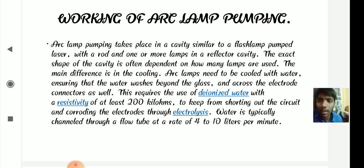This requires the use of deionized water with a resistivity of at least 200 kilohms to keep from shorting out the circuit and corroding the electrodes through electrolysis. Water is typically channeled through a flow tube at a rate of 4 to 10 liters per minute. This is usually how the arc lamp pumps.